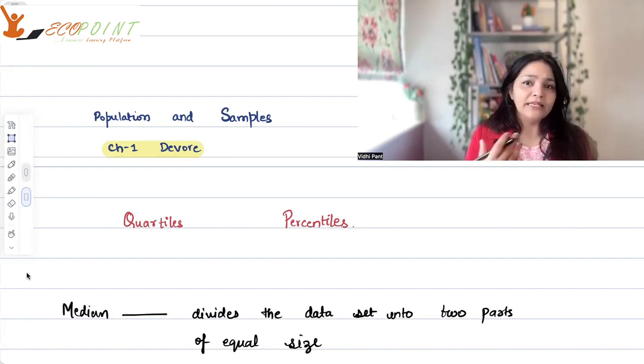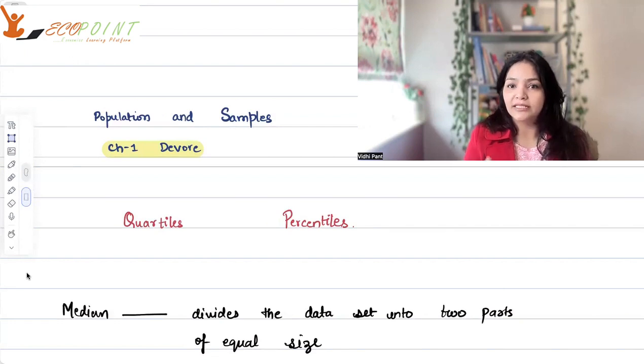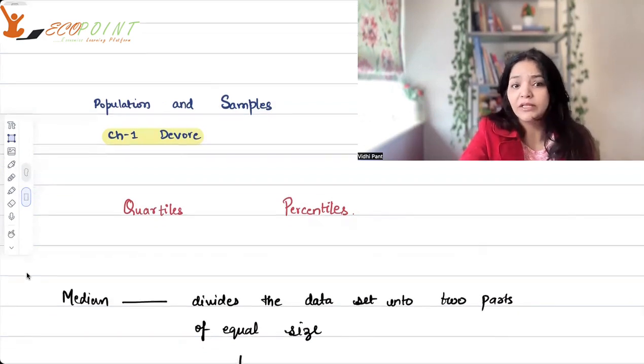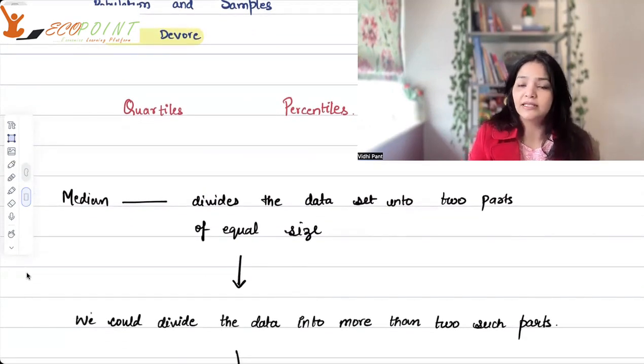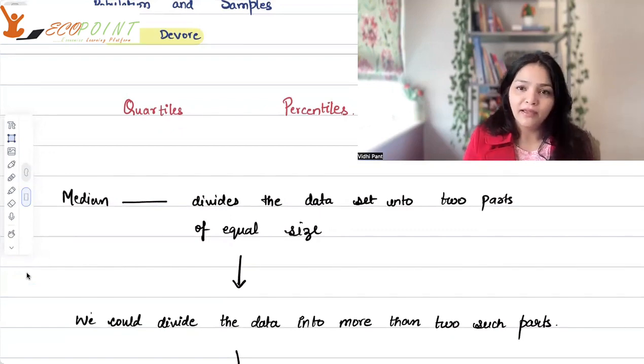Now, in case you want to divide your data set into some more parts, why can't we do that? We can do that. So we can divide the data into more than two such parts. And there comes the concept of quartiles, percentiles.